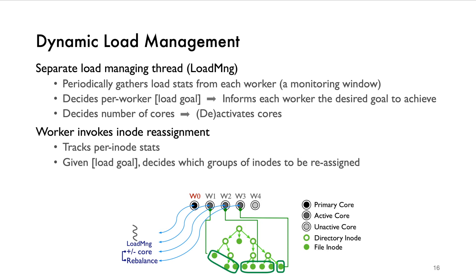To handle dynamic load changes and balance load across cores, UFS has a separate load managing thread. The load managing thread periodically collects load stats from each worker, computes the high-level load balancing plan, that is, assigns each worker a target load goal, and informs workers of the assigned load goal to achieve. For example, the load managing thread may tell worker 0 to shift 50% of its load to worker 1. Another responsibility of the load managing thread is to decide the number of cores to use and wake up or shut down cores. The realization of load management requires each worker to invoke inode reassignment mechanism to shift load between cores. Given load goal from the load managing thread, each worker tries to meet it by deciding which inodes to be reassigned according to its local stats.